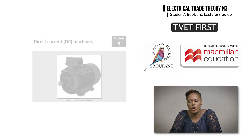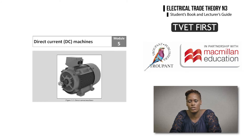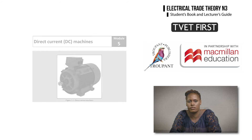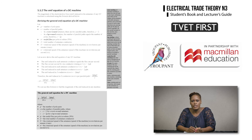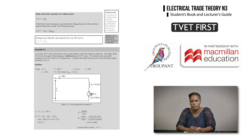New content has been added to the section on DC machines, including DC generators and several new equations and calculations. TVERT first gives a detailed explanation of the EMF equation with full definitions of all terminology. There are worked examples for the EMF calculation for both a motor and a generator.